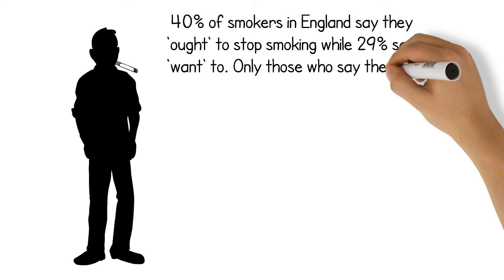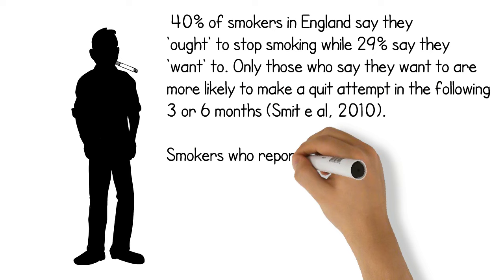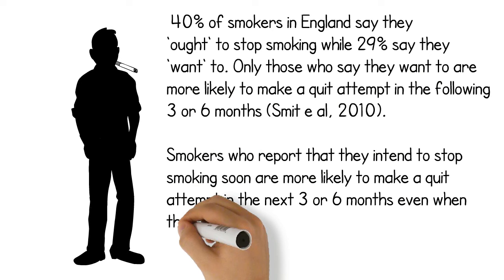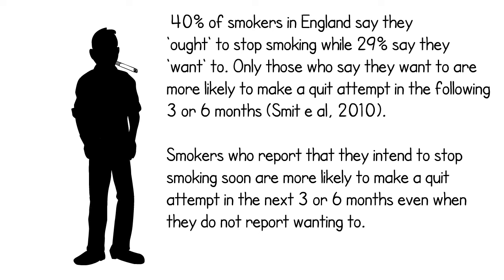For example, 40% of smokers in England say they ought to stop smoking while 29% say they want to. Only those who say they want to are more likely to go on to quit in the following three to six months or at least make an attempt at quitting. However, research has also shown that smokers who merely report they intend to stop smoking soon are more likely to make a quit attempt in the next three to six months even when they do not report wanting to. So the take-home message here is that wants and intentions are big motivators and predictors of behaviour.